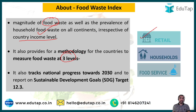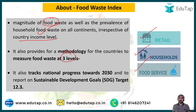The three levels are: first, Retail — non-specialized stores where food and beverages are sold; second, Household — our homes; and third, Food Services — settings where a substantial amount of food is cooked and consumed, such as hotels, restaurants, school dormitories, or hostel messes. This index also tracks national progress towards food waste reduction.